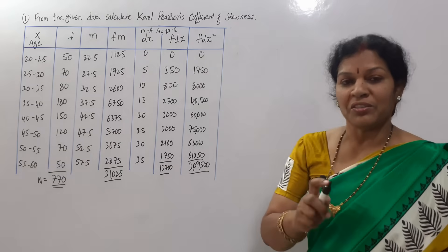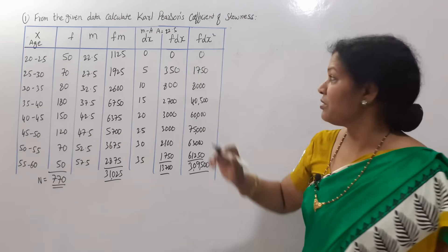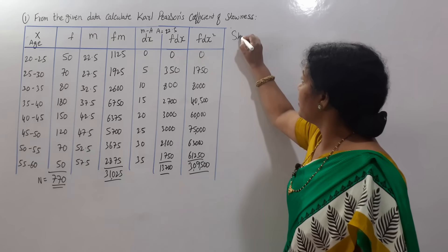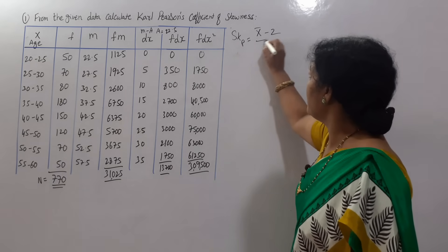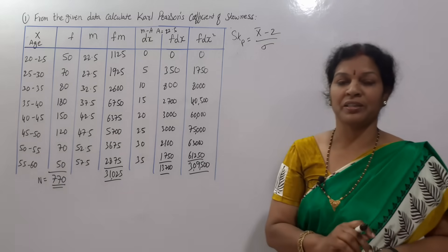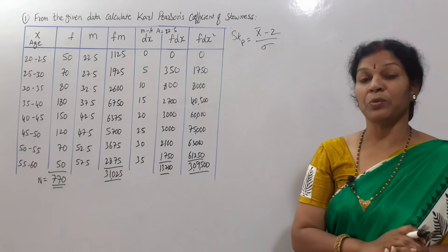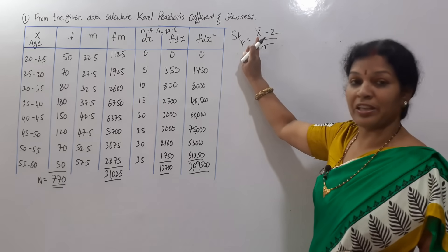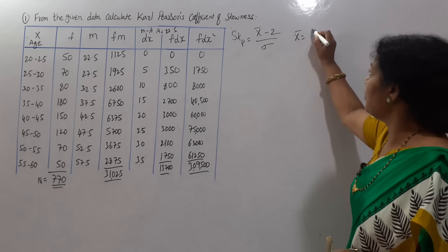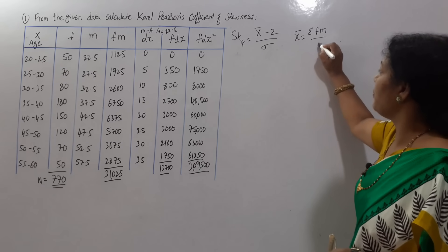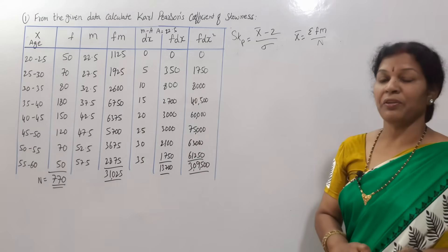What is the formula of Karl Pearson's skewness? SKP formula is x bar minus z by ρ. What do we need first? X bar. What is the formula of x bar? X bar equals sigma f m by n.